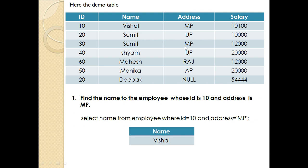MP is one more address than 10. We have the command to select name from employee where ID equals 10 and address equals MP. These two conditions are satisfied, so the name will be in front of us. We have a visual because we have a row which has ID 10 and address MP.